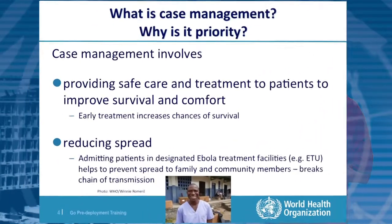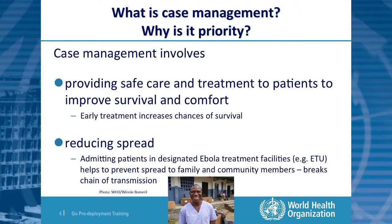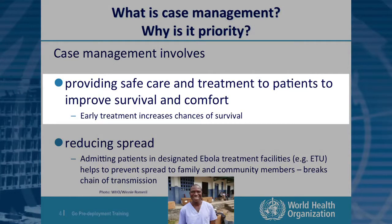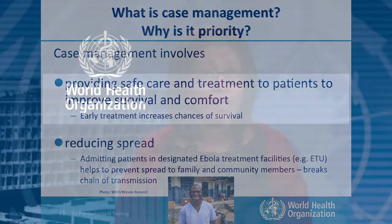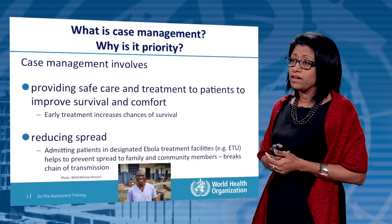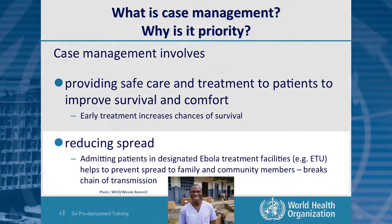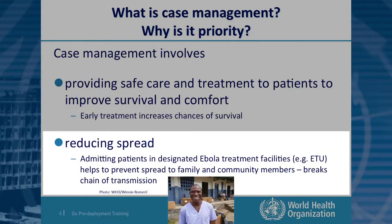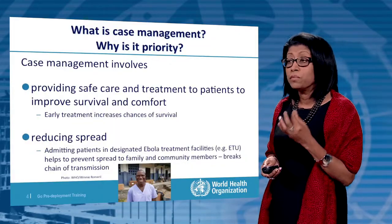Why is case management so important? Case management involves providing safe care and treatment to patients to improve their survival and also to improve their comfort. We already know that early treatment increases the chances of survival dramatically. Admitting patients in designated Ebola treatment facilities — ETUs, Ebola treatment units — helps to prevent spread to family and community members and breaks the chain of transmission.